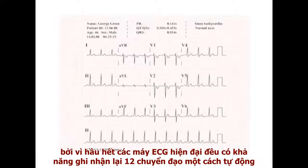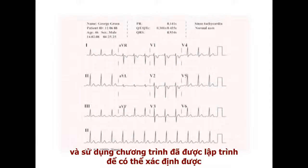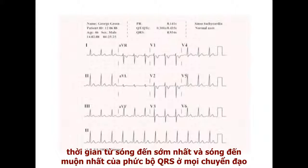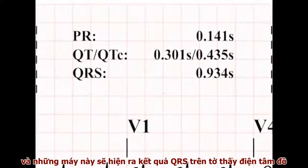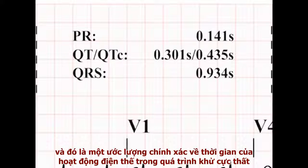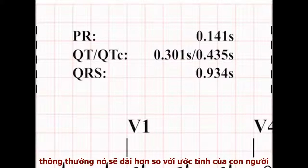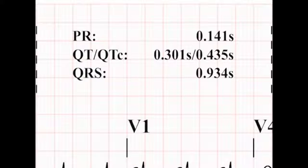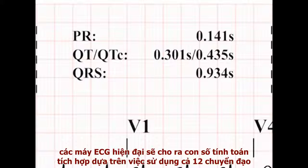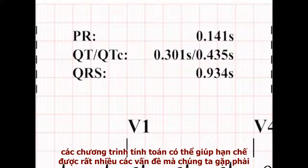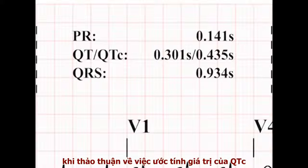Most modern digital ECG machines are capable of recording all 12 leads simultaneously and use computer programmes to identify the times of the earliest and latest deflections of the QRS complexes in all leads, then report this integrated QRS duration on the printout. This tends to represent an accurate estimate of the duration of all ventricular depolarisation events, and will always tend to be longer than the human estimate. The same problems exist for the PR interval and QT interval, and modern machines present an integrated value calculated using all 12 leads.